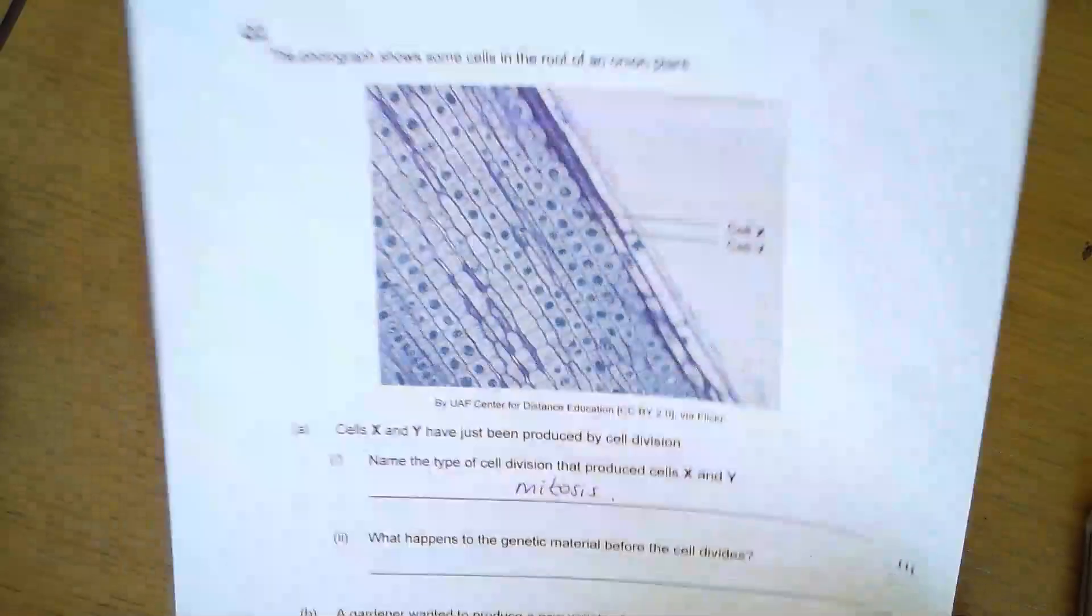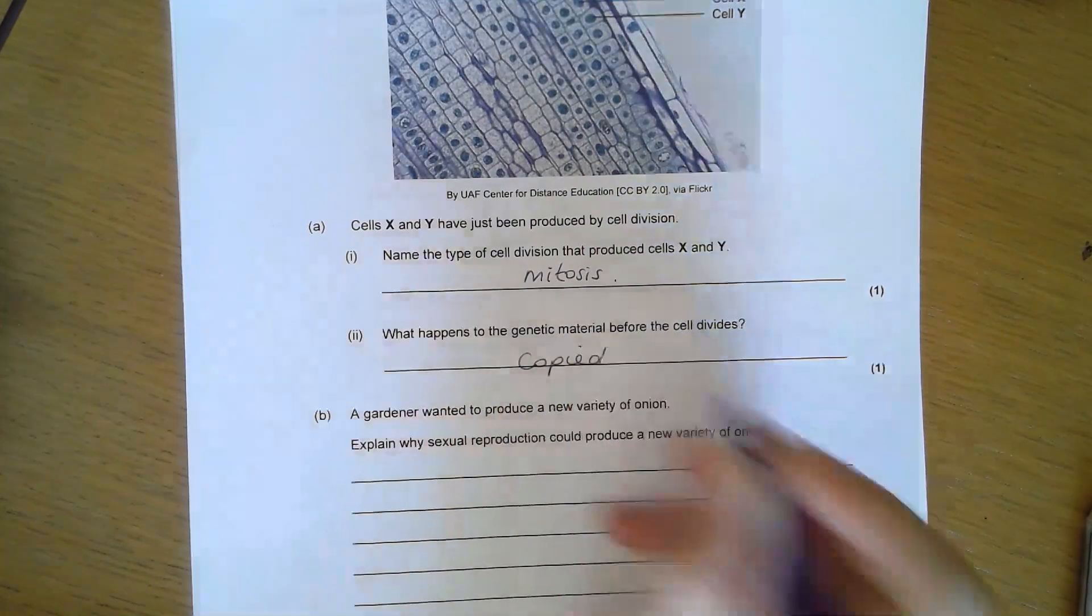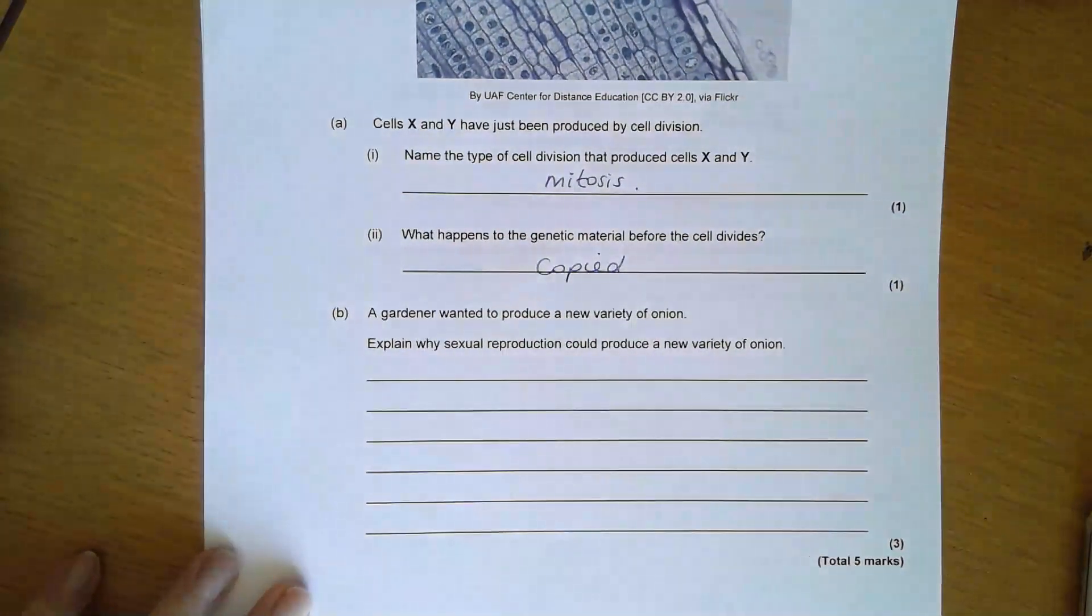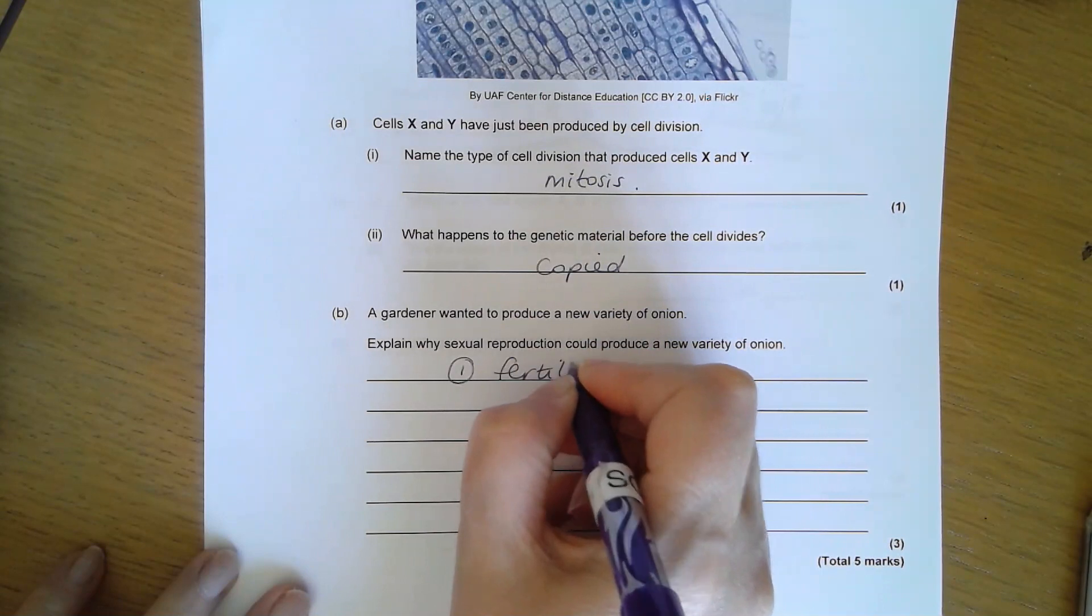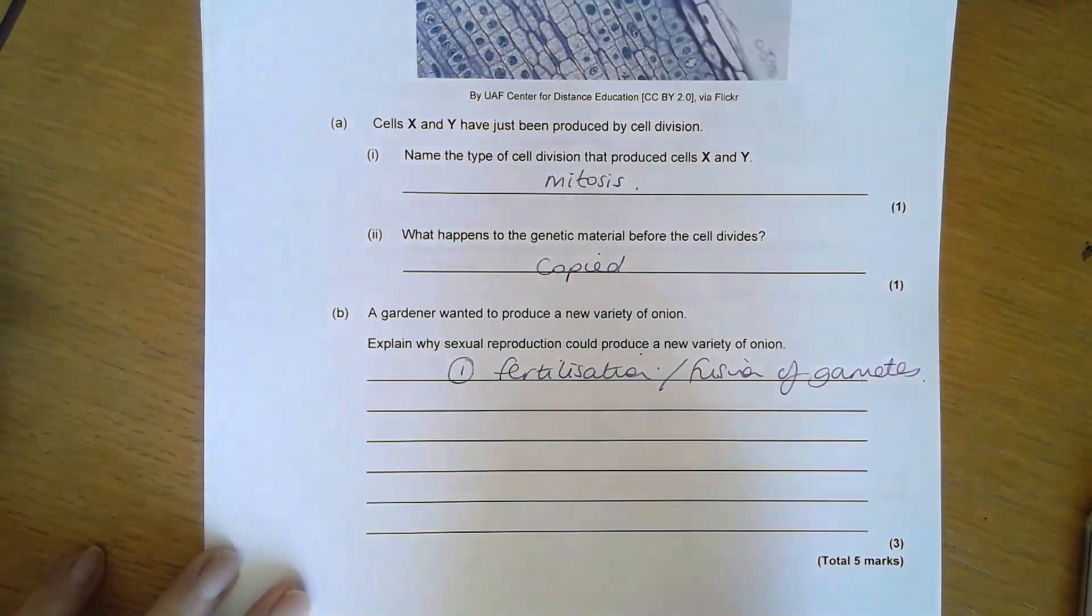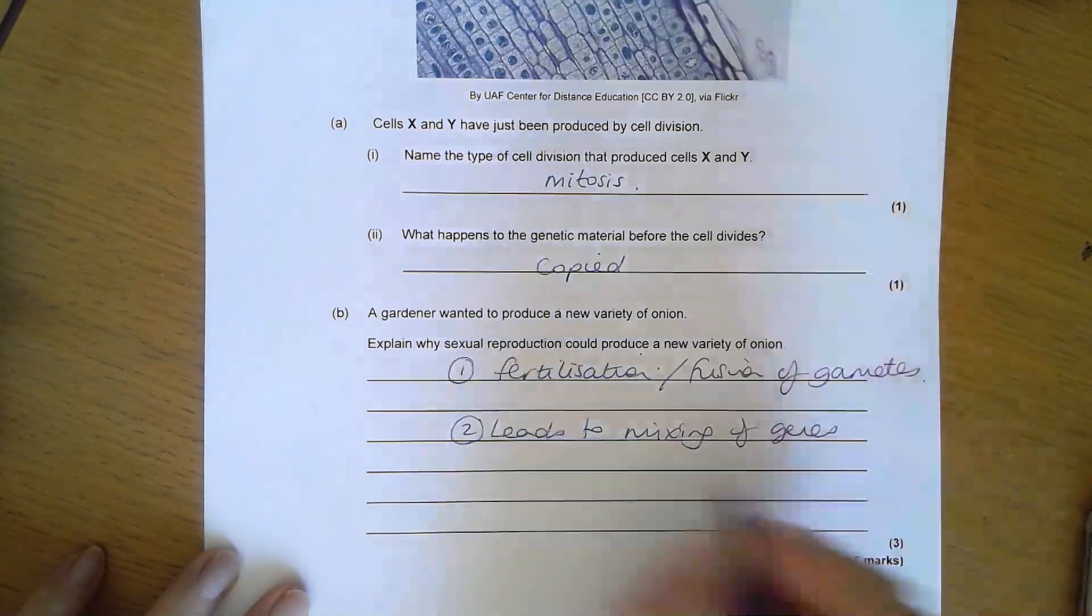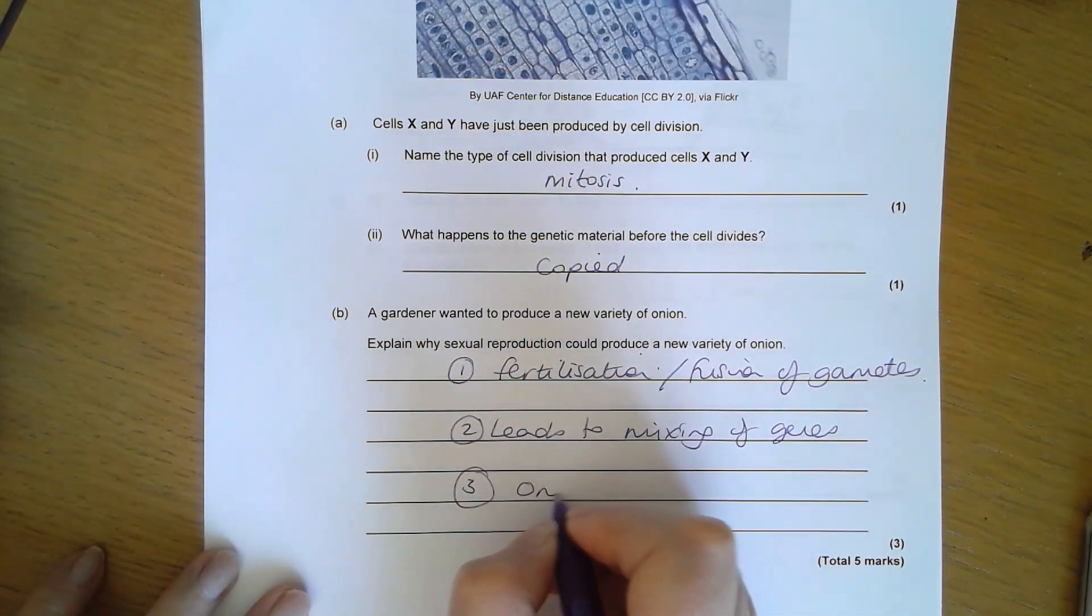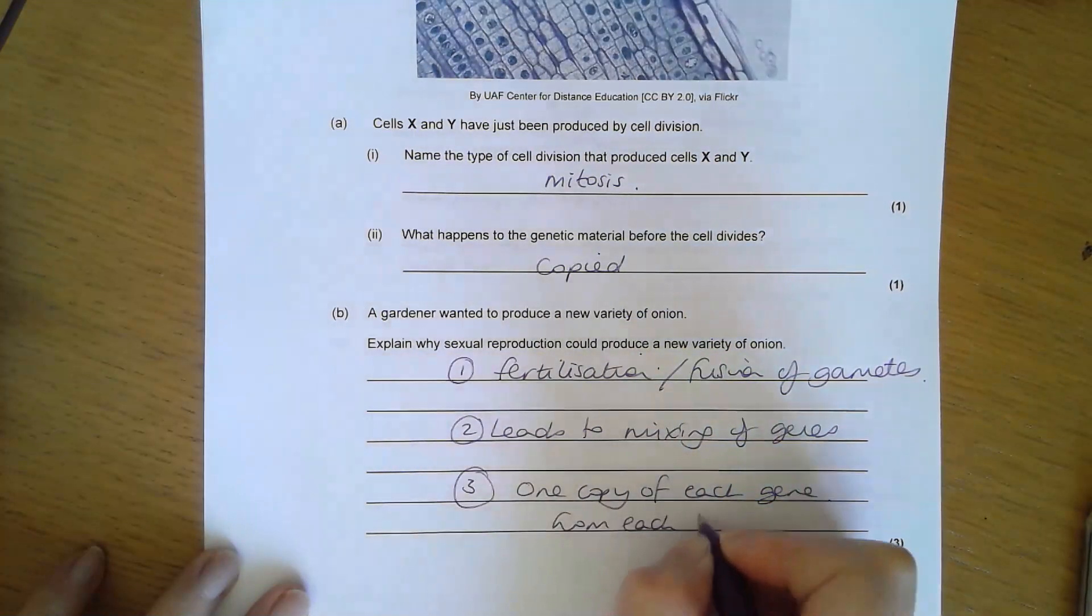What happens to the genetic material before the cell divides? That's the first stage in mitosis where it's copied or replicated. Why could sexual reproduction produce a new variety of onion? First, you have fertilization or fusion of gametes, which leads to the mixing of genes or DNA, and you get one copy of each gene or one allele from each parent.